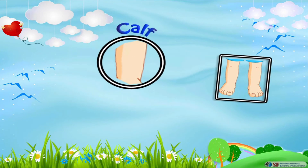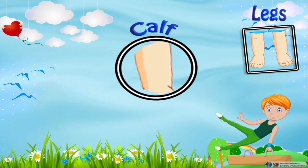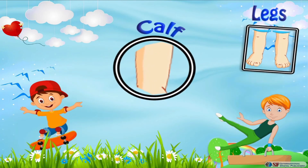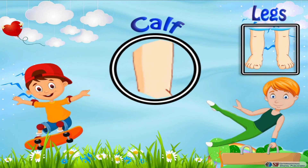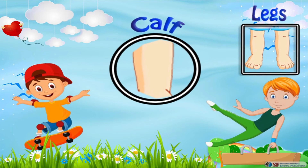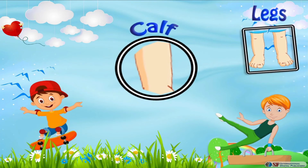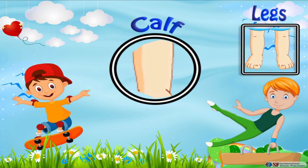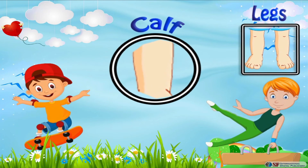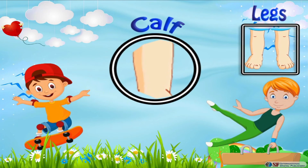The calf muscle is situated at the back of our lower leg. It supports the ankle by pulling our heel upwards to allow forward movement during walking, running, or jumping. We have a pair of calf muscles, one on each of our lower legs.